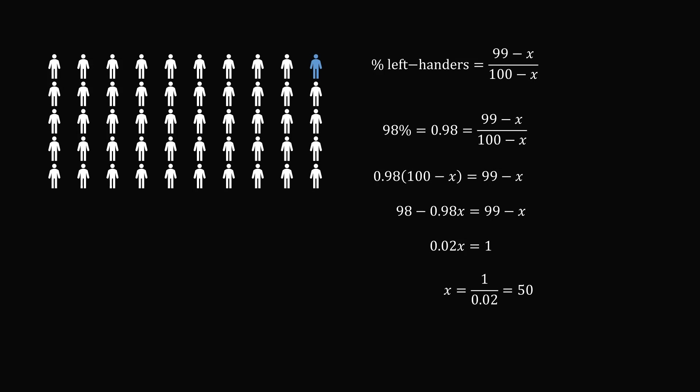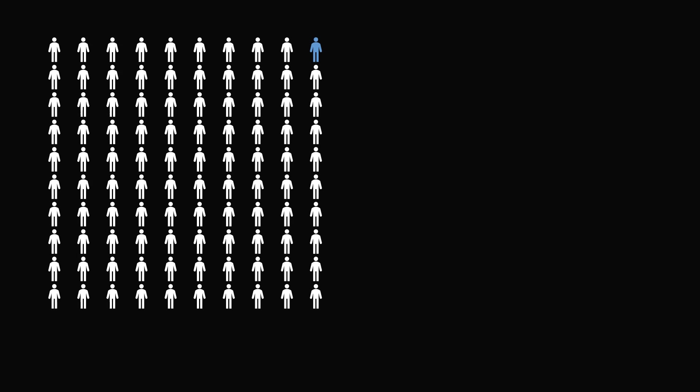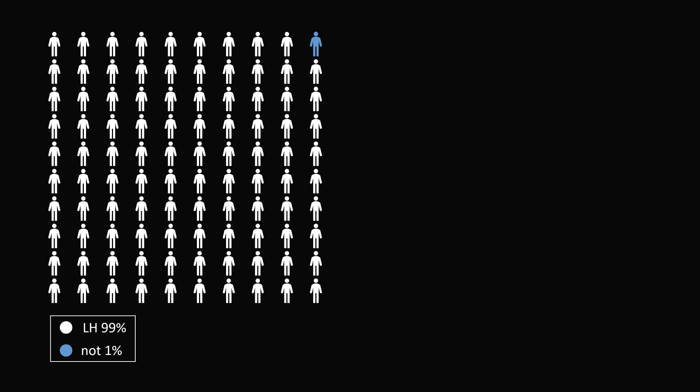So the numbers definitely check out. But I want to give one more explanation to give an intuition on why so many left-handers have to leave the room. So let's go back to the beginning, where we have a room of 100 people, where 99% of the room is left-handed, and 1% of the room is not left-handed. So of this room, exactly one person is not left-handed.